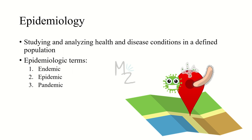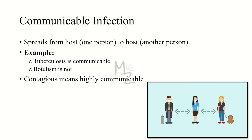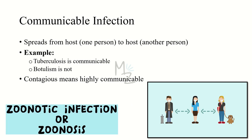As mentioned earlier, prior to talking about the epidemiologic terms we should know what is a communicable infection. A communicable infection is an infection that spreads from host to host — from one person to another. Just as in this picture, the infection spreads from person to person. Don't confuse this with the spread of infection from animal to human; that is also communicable but has a specific term called zoonotic infections.